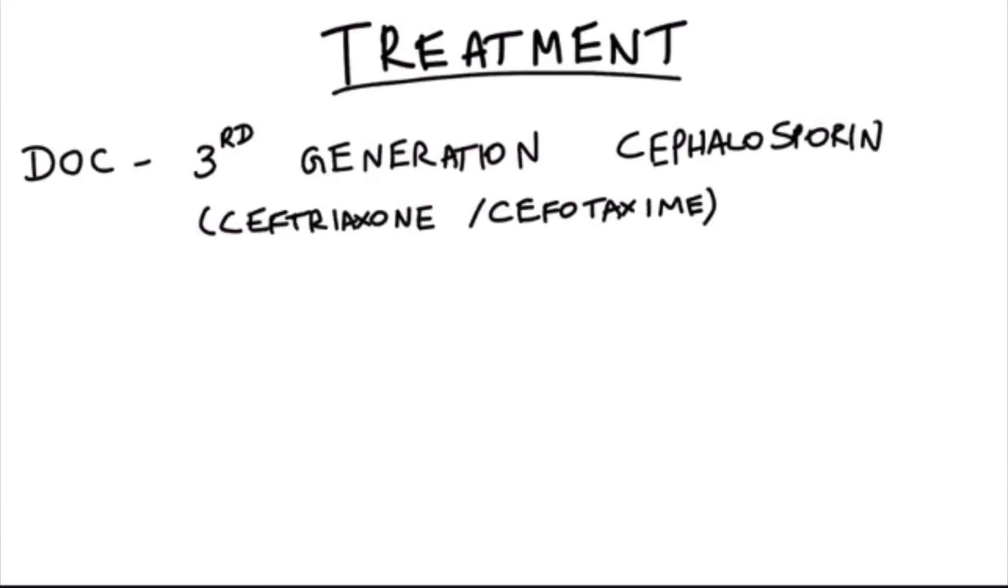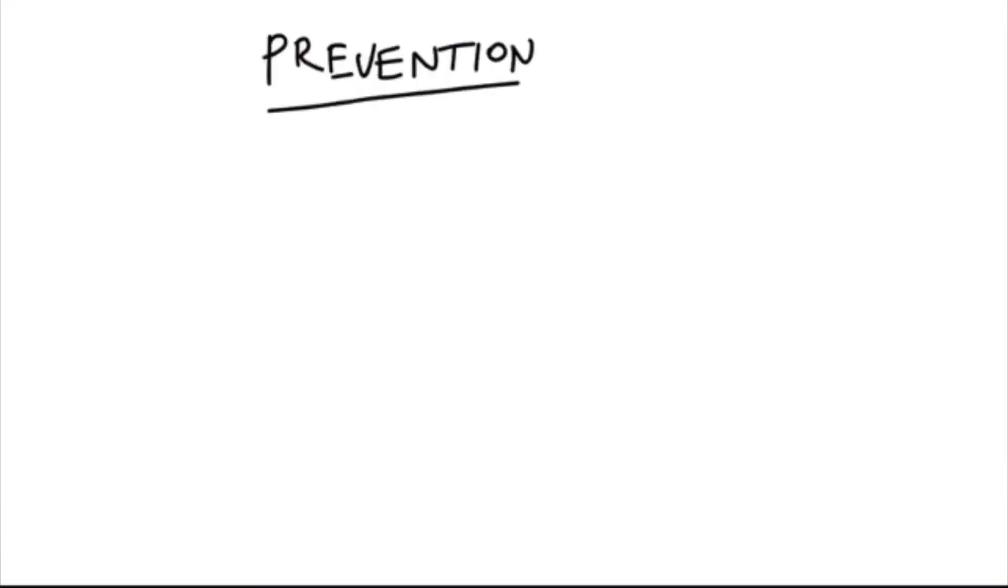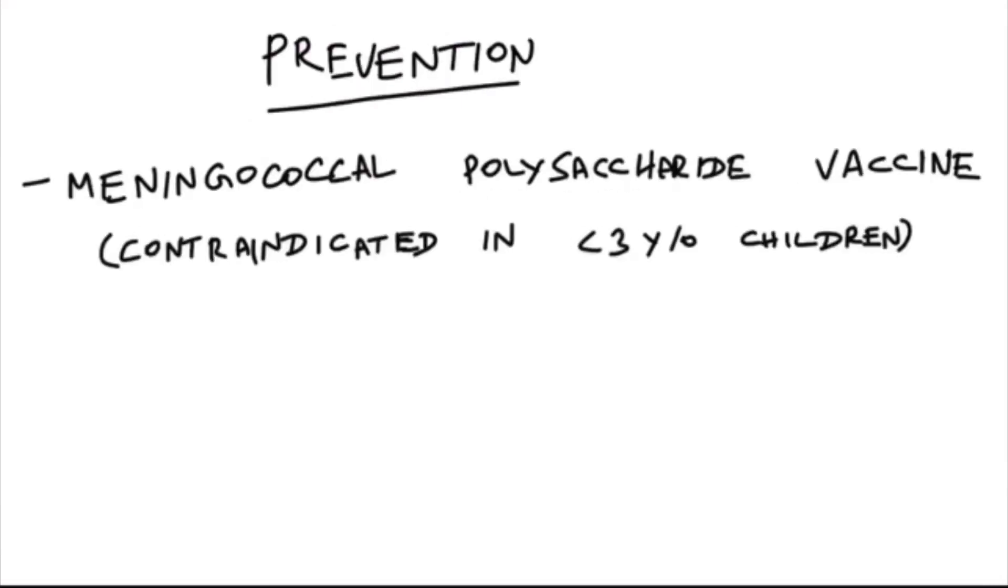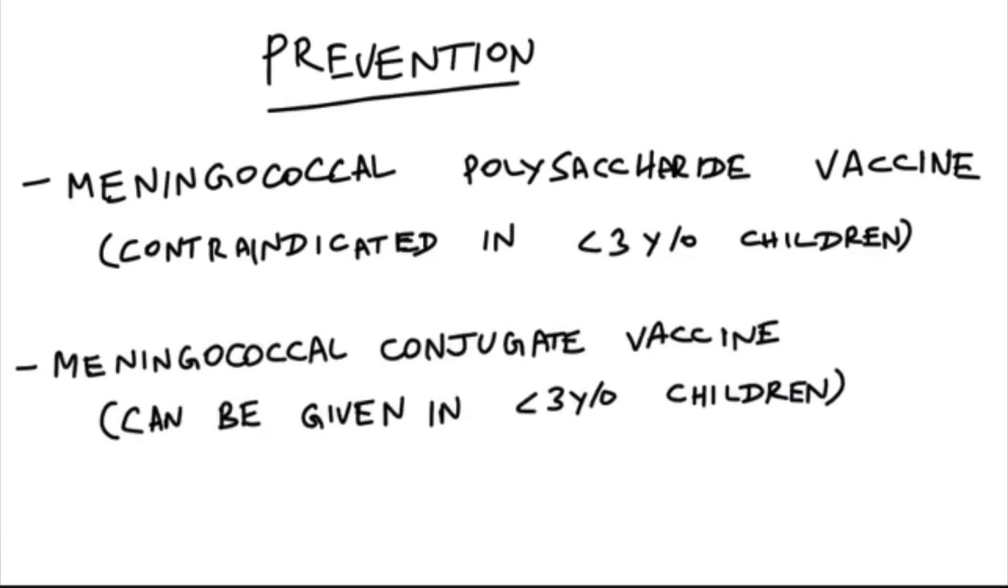The drug of choice for treatment of Meningococcus is third generation Cephalosporin. Commonly Ceftriaxone or Cefotaxime are preferred. For prevention of the infection, you can use vaccination. The commonly used vaccine is Meningococcal polysaccharide vaccine, which is contraindicated in less than three years old children. However, for that age group we can use Meningococcal conjugate vaccine, which can be given in less than three years old children.